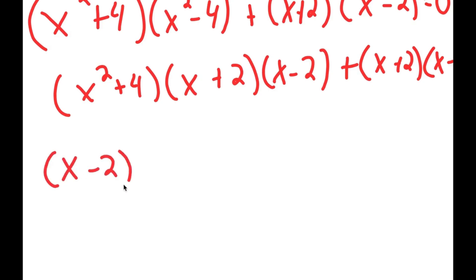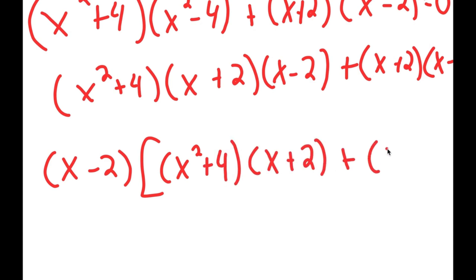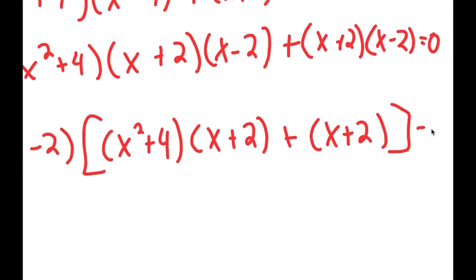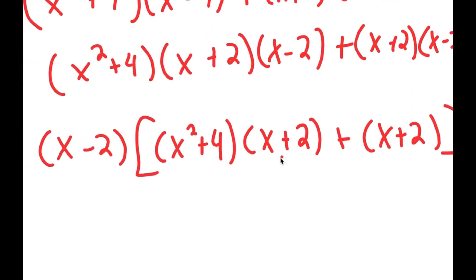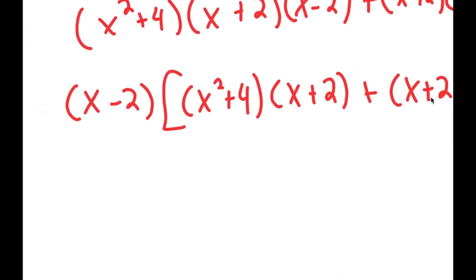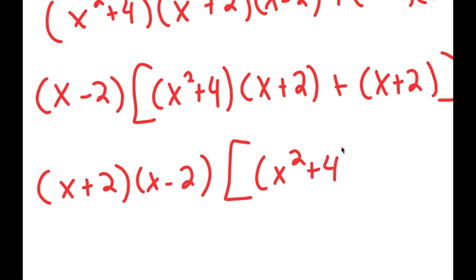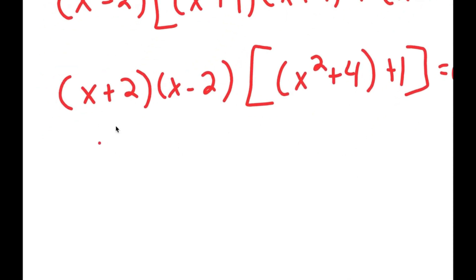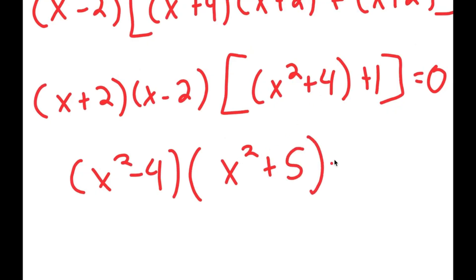We can apply difference of squares again on x squared minus 4, rewriting as x squared minus 2 squared, which equals x plus 2 times x minus 2. Factoring out x minus 2, I get x minus 2 times the quantity x squared plus 4 times x plus 2, plus x plus 2, equals 0. Then factoring out x plus 2 as well, I get x plus 2 times x minus 2 times x squared plus 5 equals 0, since x squared plus 4 plus 1 gives x squared plus 5.